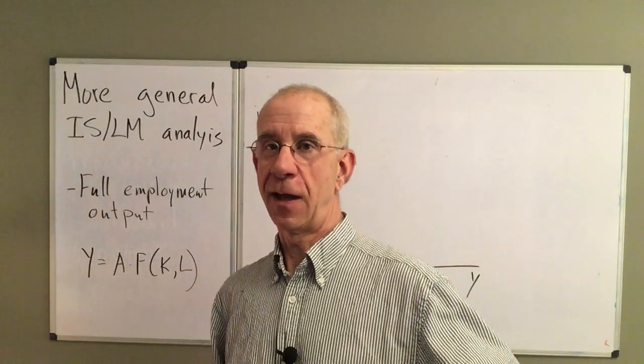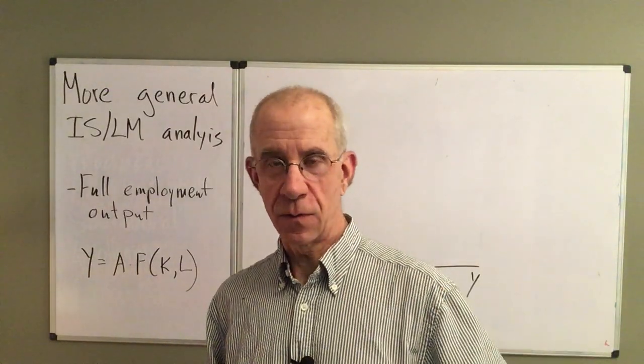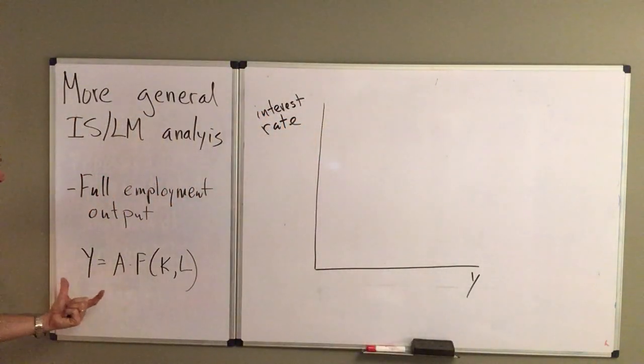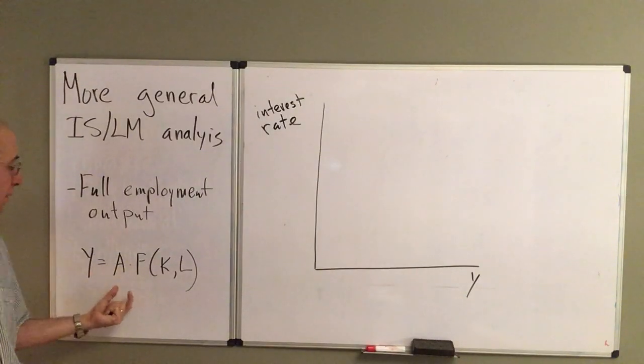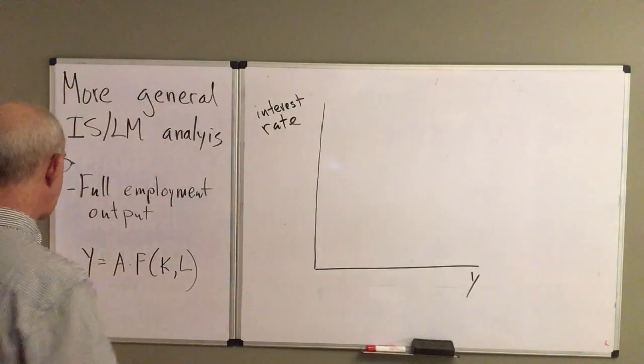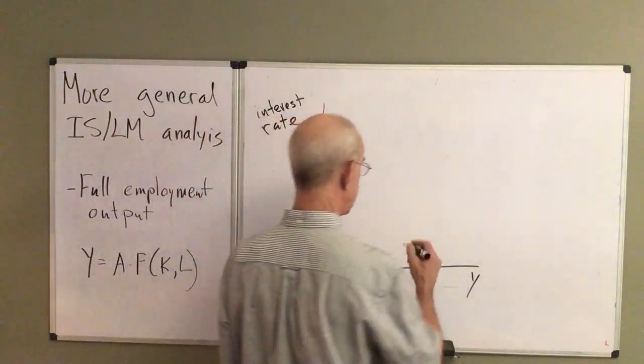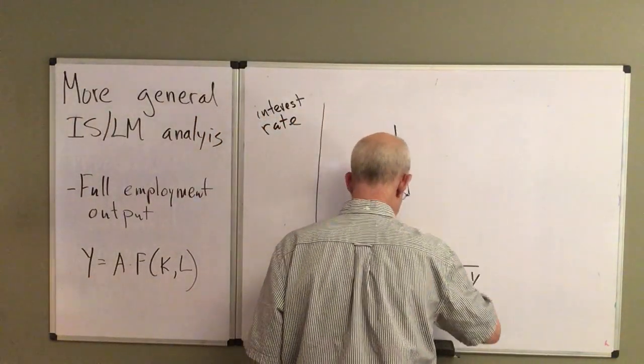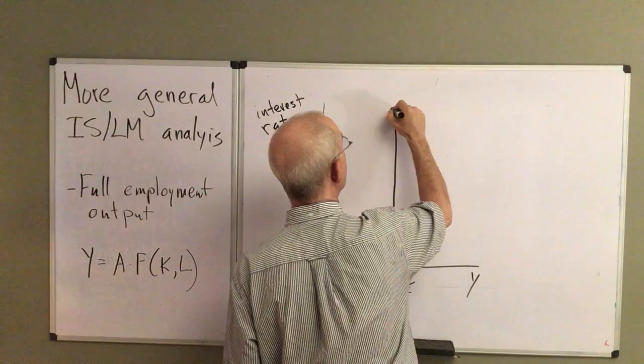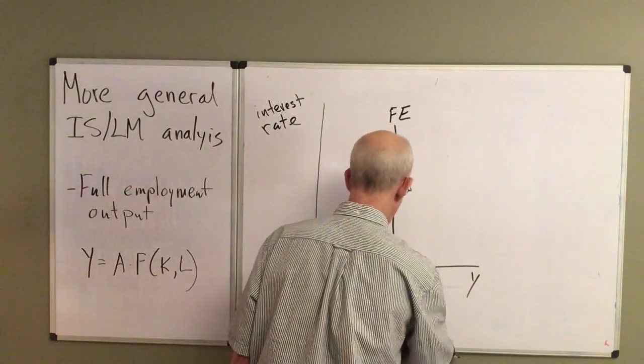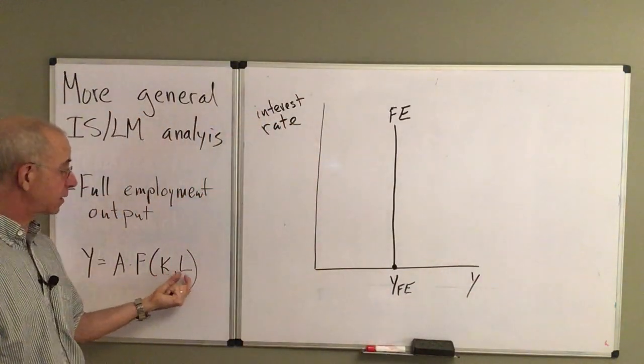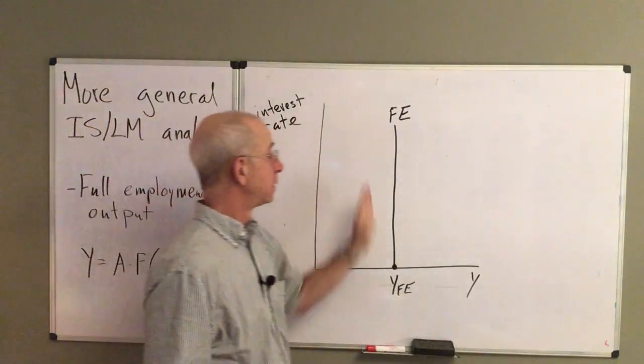This is the output such that all workers that want to work can. We introduced earlier this idea of an aggregate production function, which depends on technology A, and the capital stock and labor stock. Let's imagine that we've got some full employment level of output that's related to the capital stock, the labor stock, and technology here.